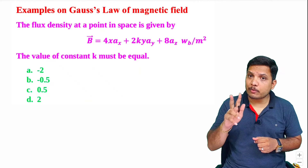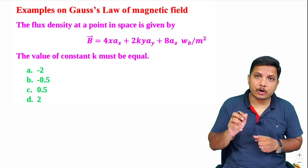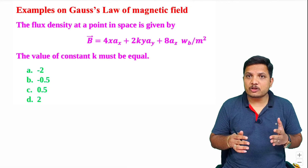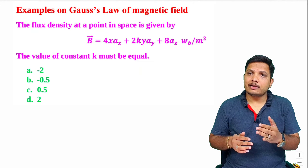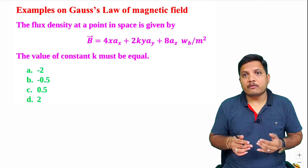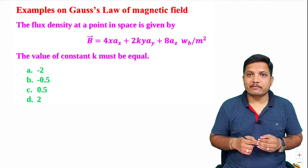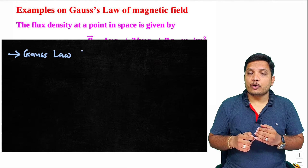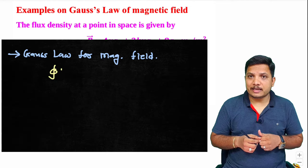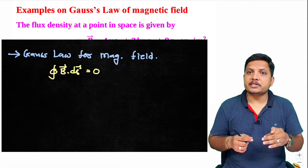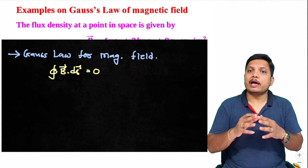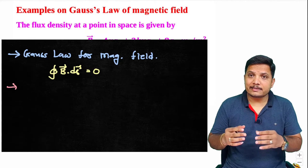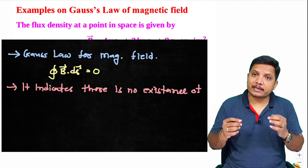I will be solving two very interesting problems based on Gauss's law for magnetic field. Before we solve the problems, let me state the law: the magnetic flux through a closed surface will always be zero, or equivalently, the surface integration of magnetic field over an enclosed surface is always zero. This indicates there is no existence of a magnetic monopole.